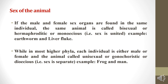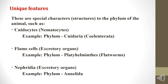Regarding the sex of the animal: if the male and female sex organs are found in the same individual, the animal is called bisexual, hermaphroditic, or monoecious — meaning the two sexes are united. Examples include earthworm and liver fluke. In most higher phyla, each individual is either male or female, called unisexual, gonochoristic, or dioecious — meaning two sexes are separate. Examples include frog and humans.